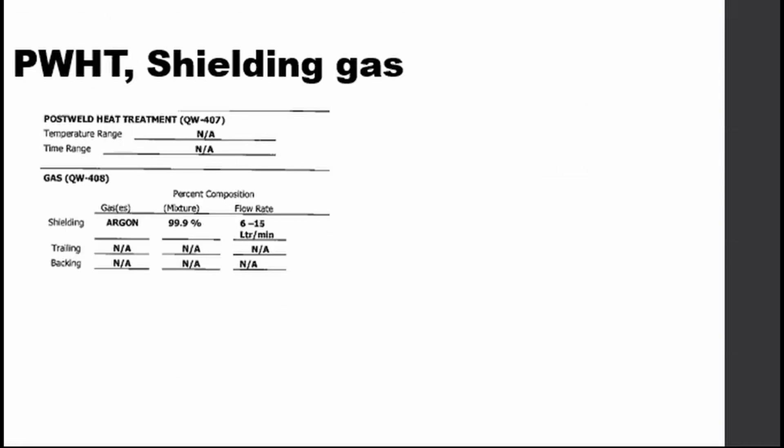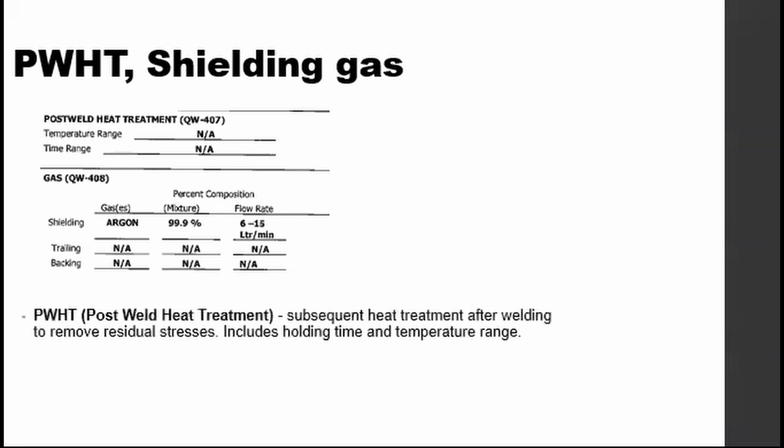PWHT, or post-weld heat treatment, is the subsequent heat treatment applied after welding to remove residual stresses. It includes the holding time or soaking time and the temperature range. This is essential for some metals because if the residual stress is not removed, it will cause weld defects in the metal.